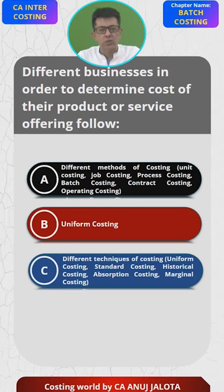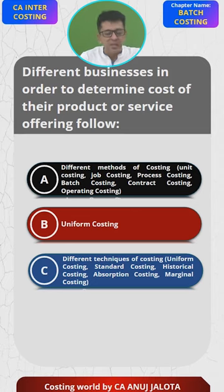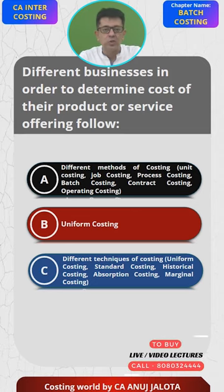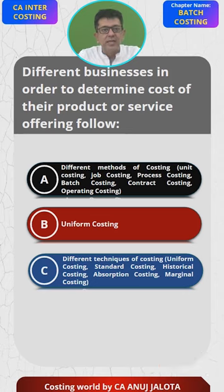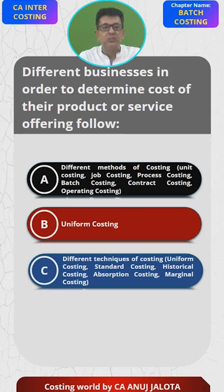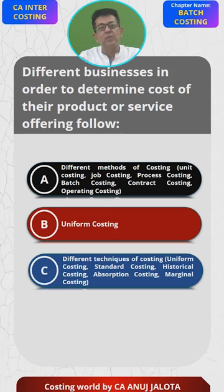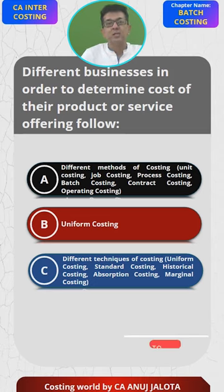Under absorption costing, we consider fixed cost. Under marginal costing, we only consider the variable cost or specific costs in relation to a particular product. Under historical costing, costs are recognized based on what the cost was when it was incurred, not based on whatever the cost will be in the future. These are the different techniques of costing.